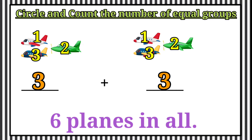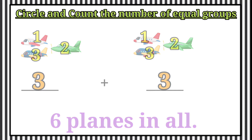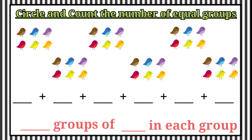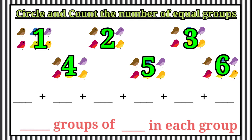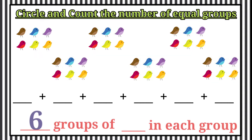Let's see the next example. Here some birds. Let's count groups first. 1, 2, 3, 4, 5, 6. Here 6 groups.